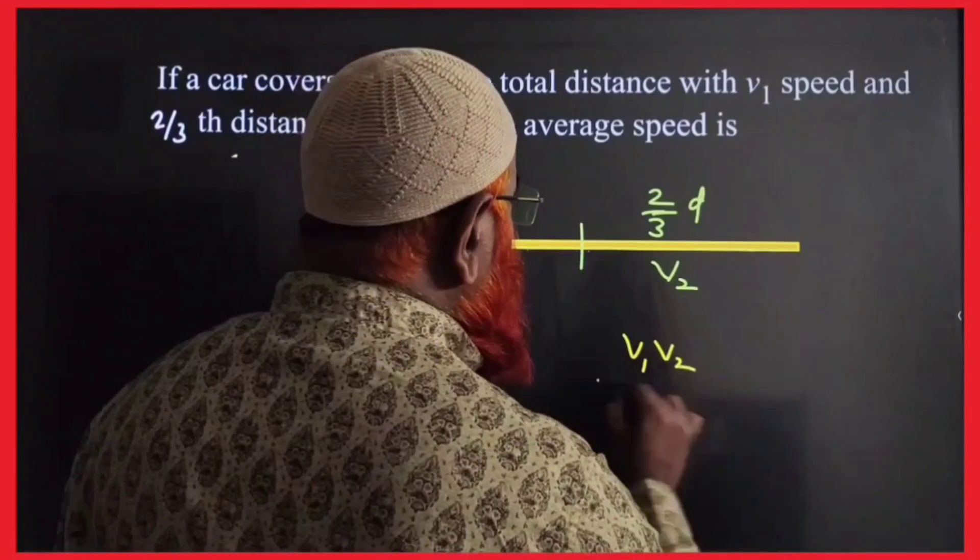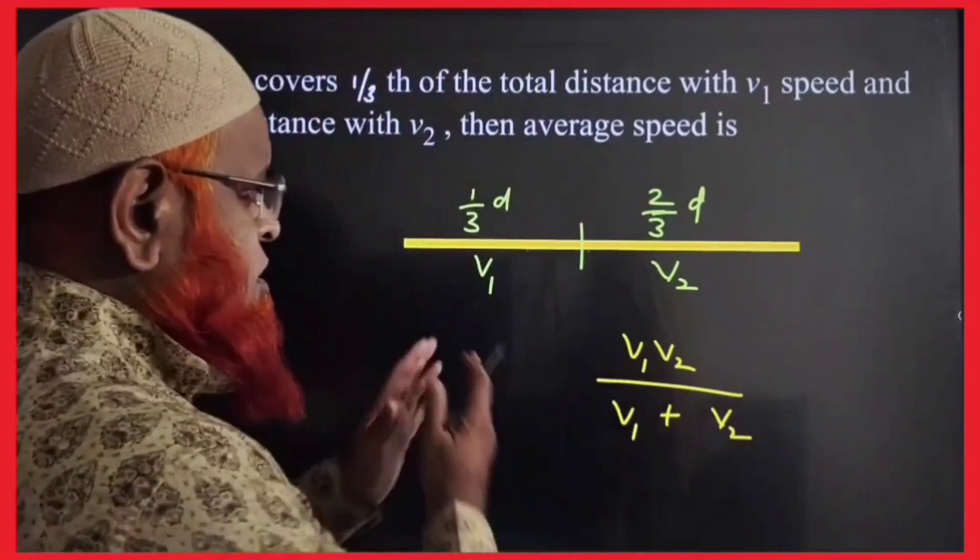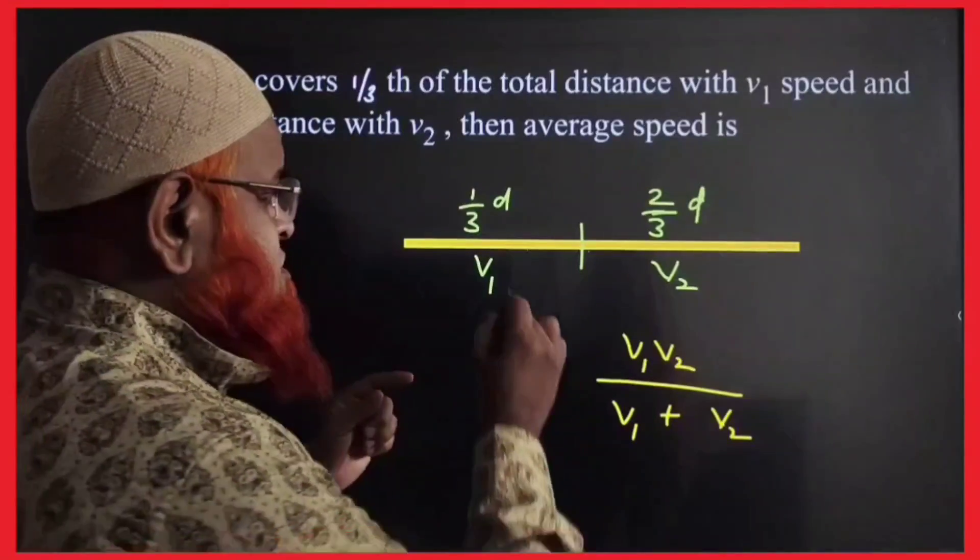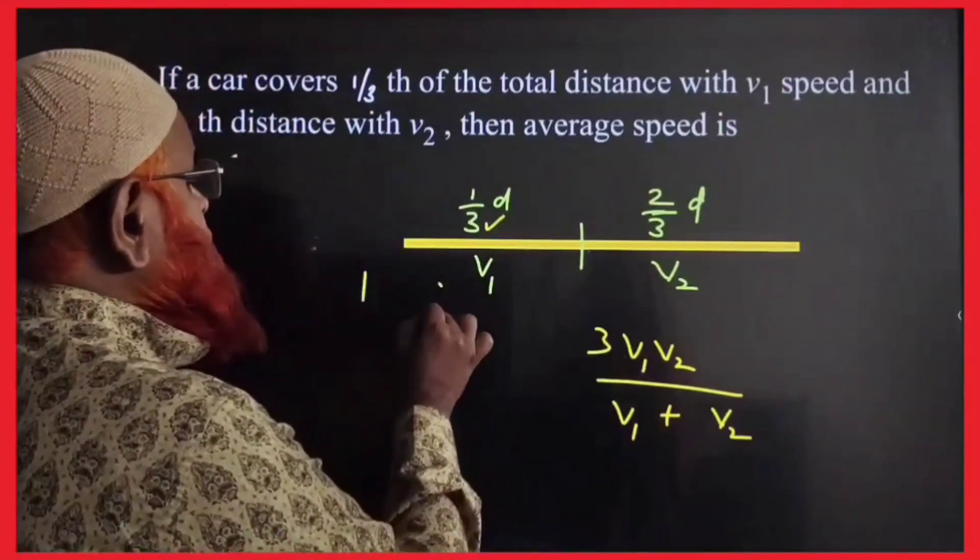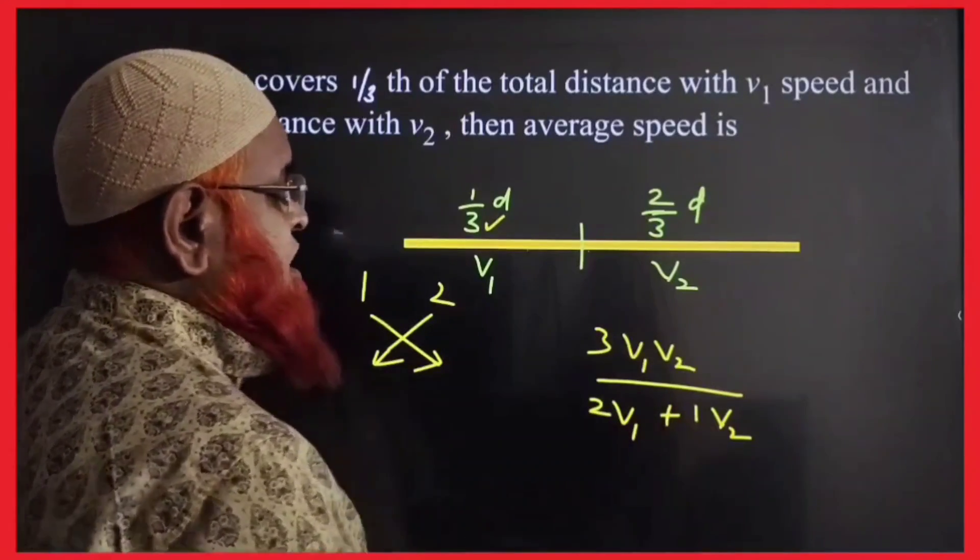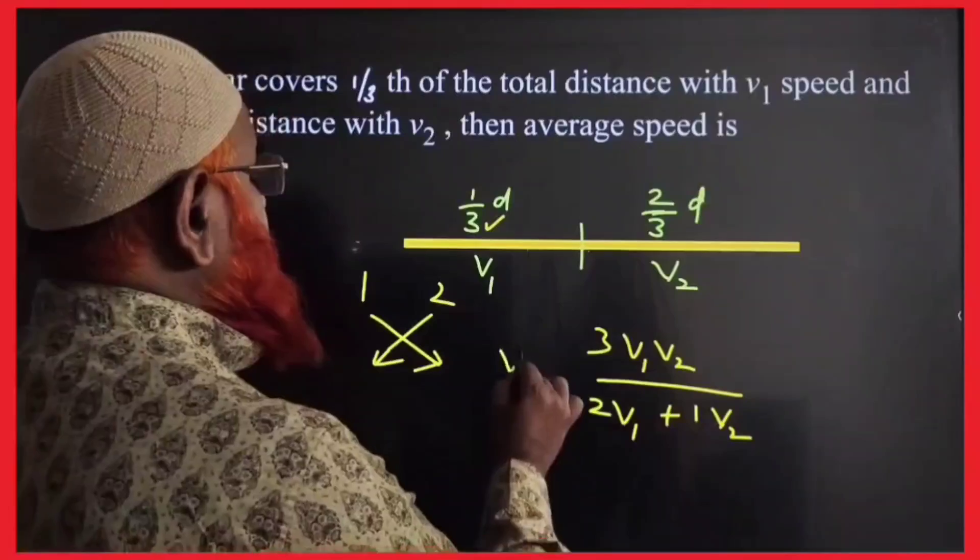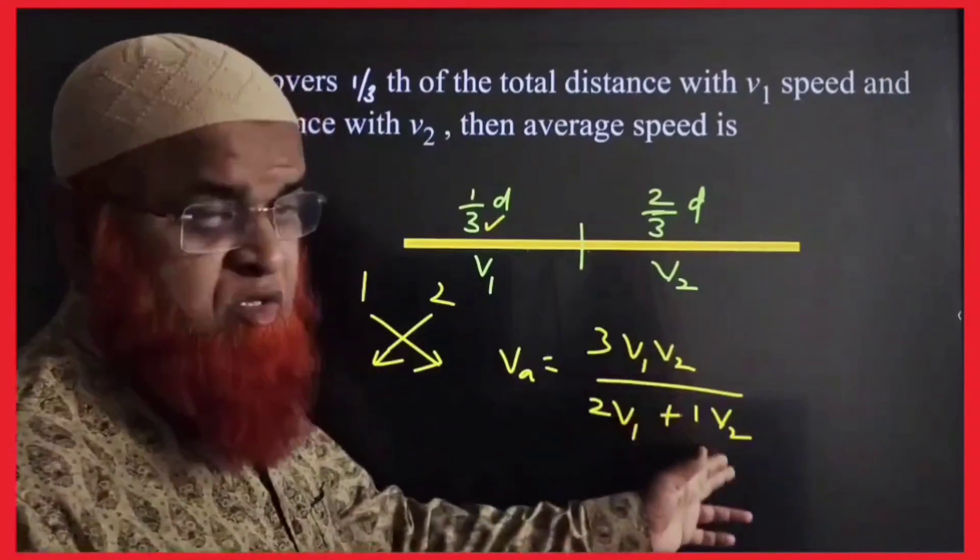Here, just you write v1, v2 by v1 plus v2. And you know, one third and two third is there. So, third, three, you have to take in the numerator. So, one third and two third, crisscross. First, you take two and then you take one, that's it. So, your answer is ready. V average is nothing but 3 v1 v2 by 2 v1 plus 1 v2.